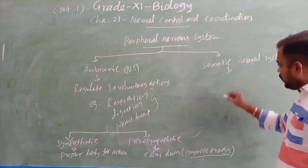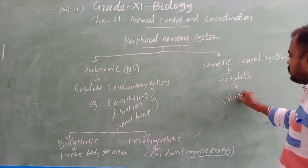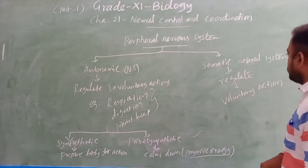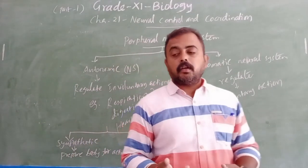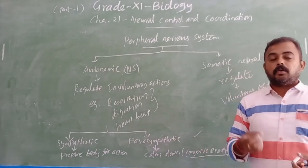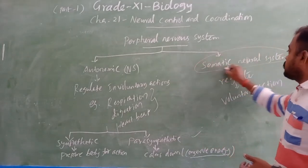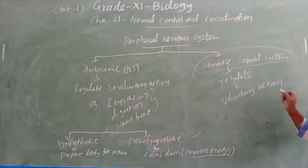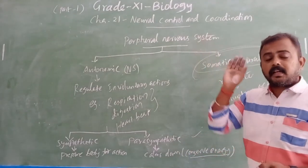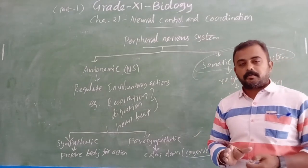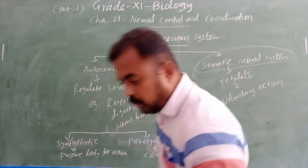The somatic nervous system regulates voluntary actions — actions under our control, such as muscle movements. If you want to pick up a book, write, or see something, those voluntary actions are done under your control and regulated by the somatic neural system. The nervous system passes through one specialized cell called a neuron, which does all the processes.